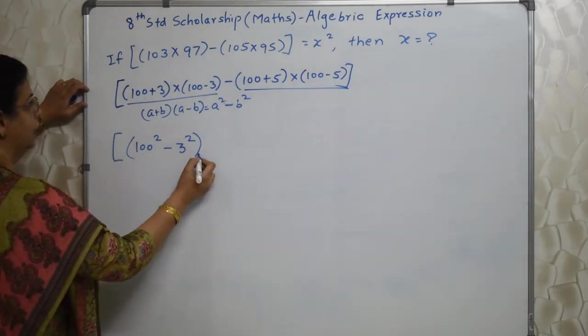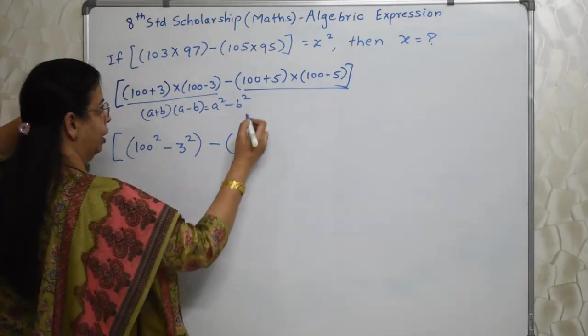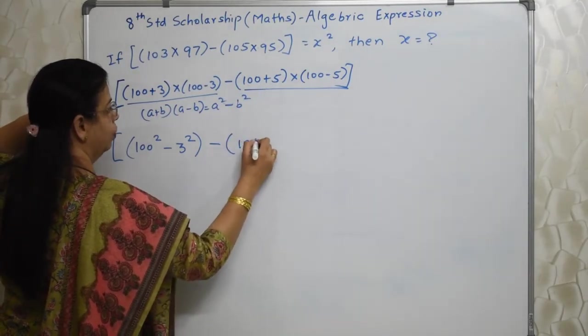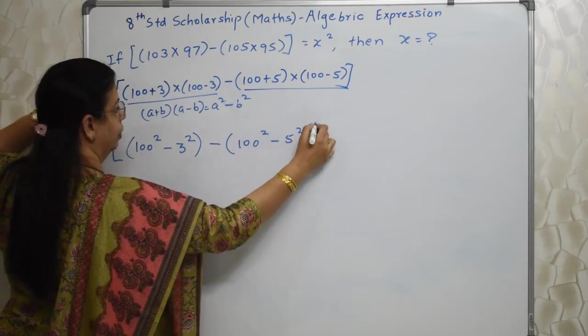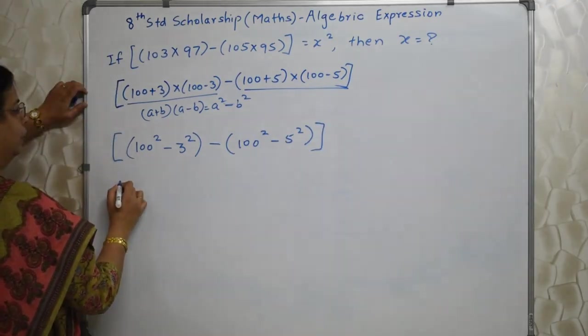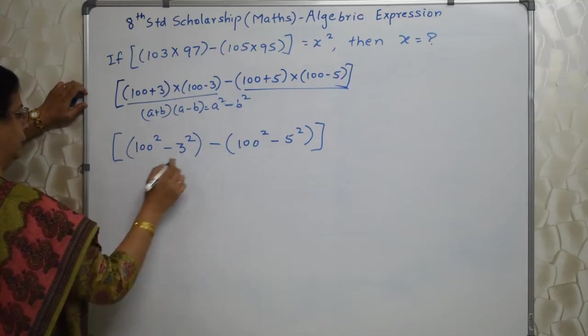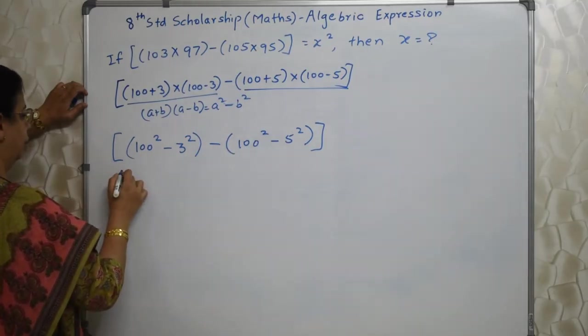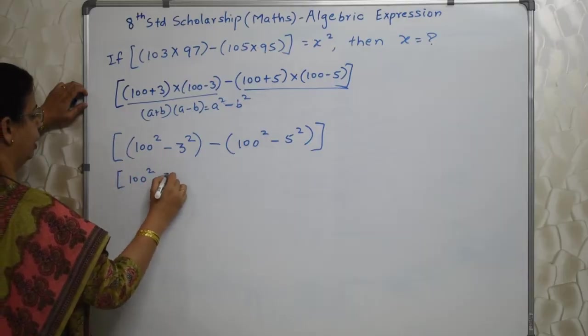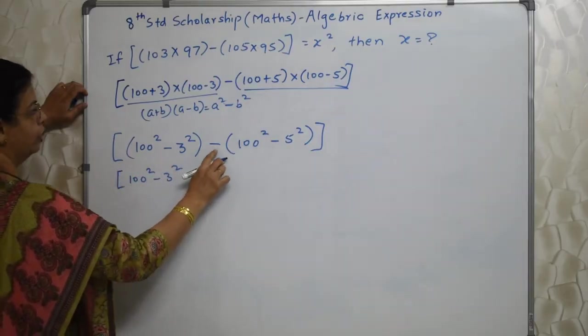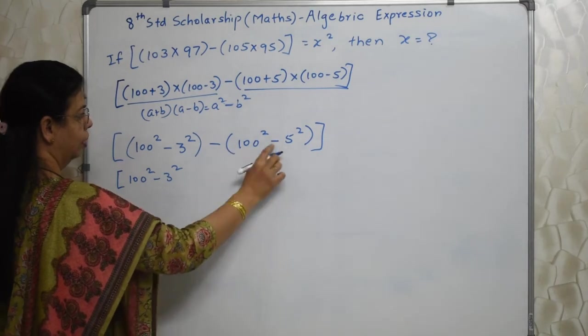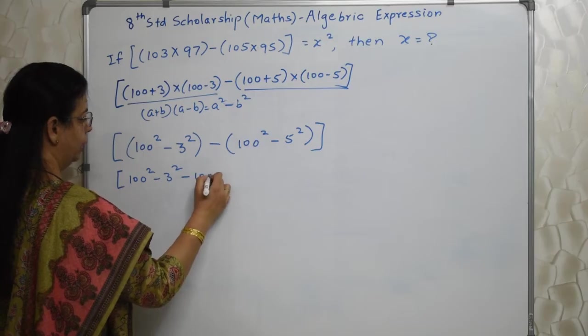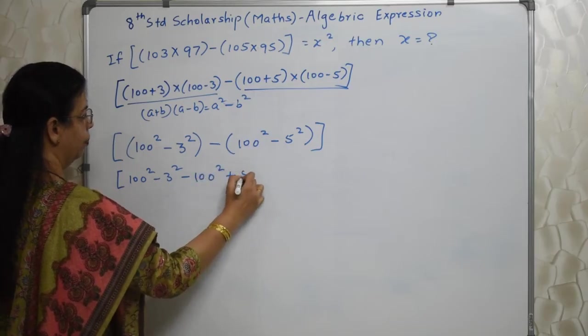So I can write like this. Minus same thing. Here A is 100 B is 5. So 100 square minus 5 square. Now I am removing that minus sign and that bracket. So it is 100 square minus 3 square. Because of this minus both these terms will change their signs. So 100 square was plus. So it is minus now and this will become plus.